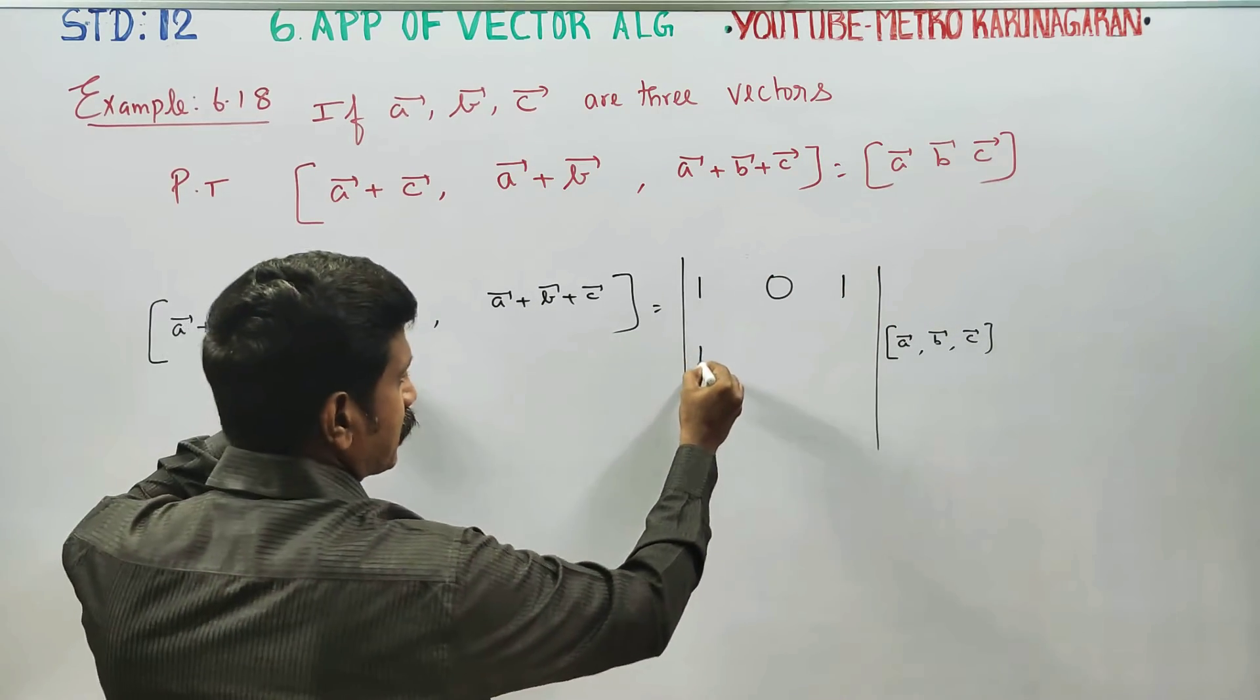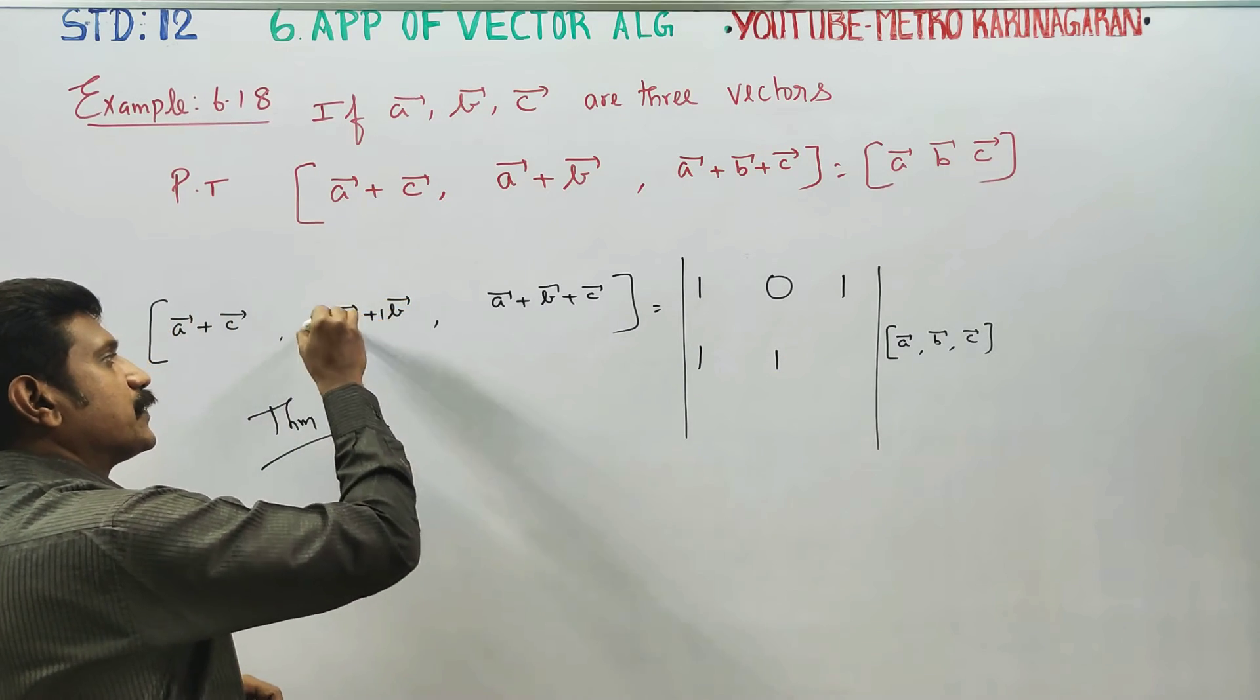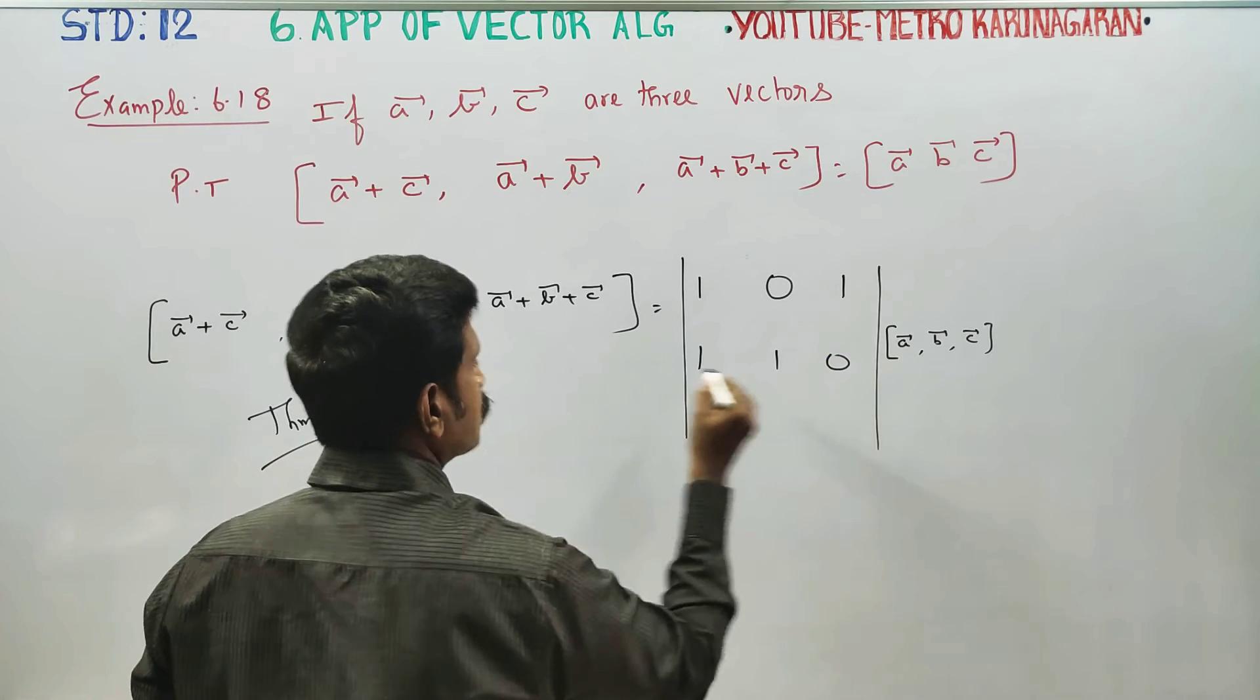A vector is the number 1, the B vector's number. C vector isn't, but then it will be 0c. So zero is this.